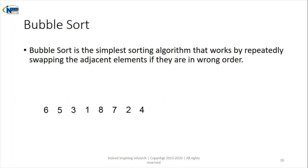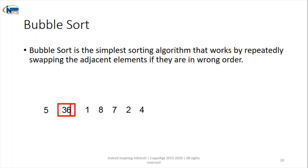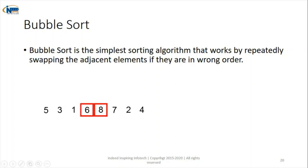The ninth algorithm is bubble sort. In bubble sort, two elements are compared and the smaller element is shifted towards the left for ascending order. This keeps happening, and after one full pass it iterates again from the beginning, continuing until the array is fully sorted. This is called bubble sort.